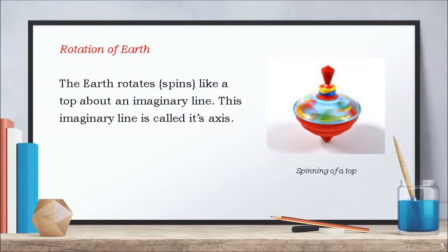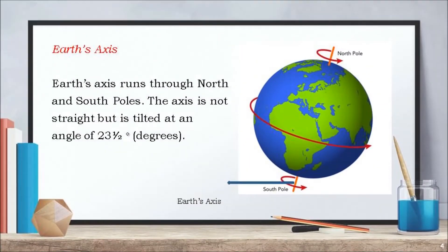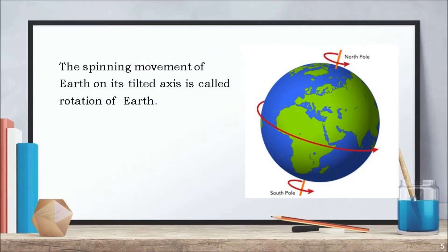Now let us see what is rotation of earth. The earth rotates, that is, spins like a top about an imaginary line, and this imaginary line is called its axis. This imaginary line, that is the axis of earth, runs through the north and south poles. The axis is not straight but is tilted at an angle of 23.5 degrees. The earth keeps spinning on its tilted axis, and such a spinning movement of earth is called rotation.